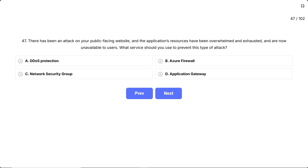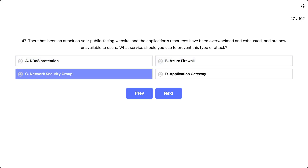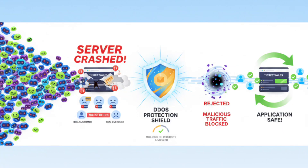The options are: A, DDoS protection; B, Azure Firewall; C, Network Security Group; D, Application Gateway. Imagine thousands of bots flooding a ticket-selling website all at once, crashing the servers so real customers can't buy tickets — that's a DDoS attack. You need a specialized shield that can handle millions of malicious requests and filter them out before they reach your application.